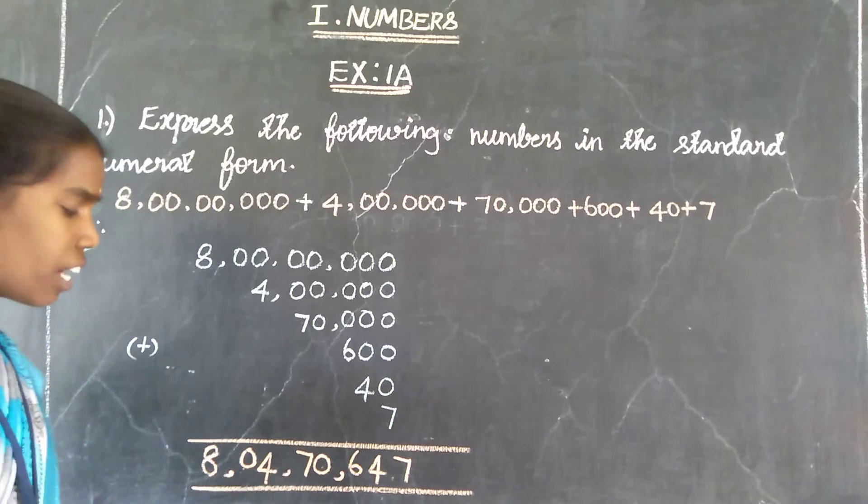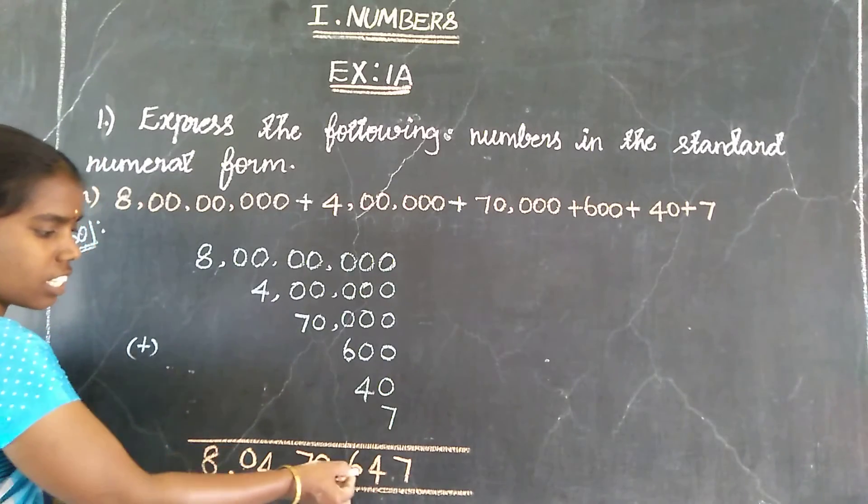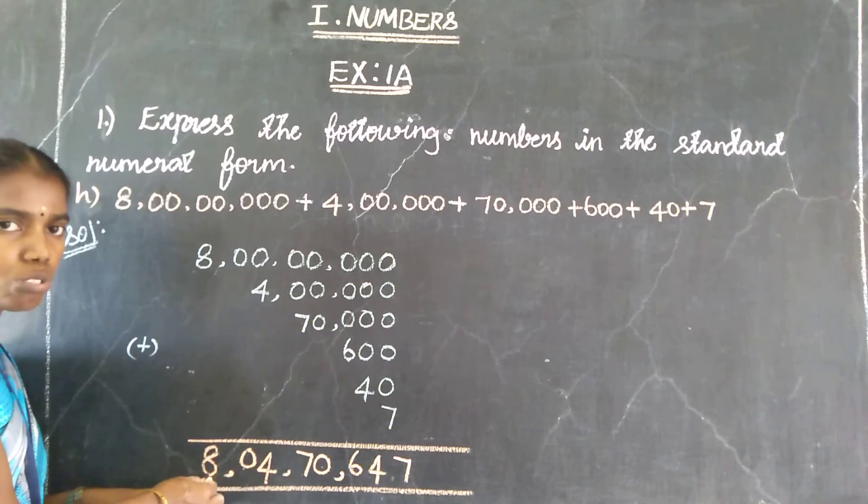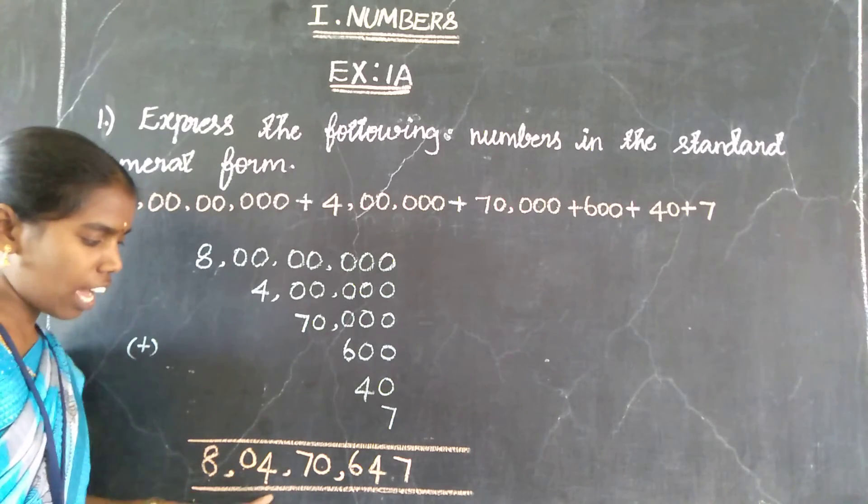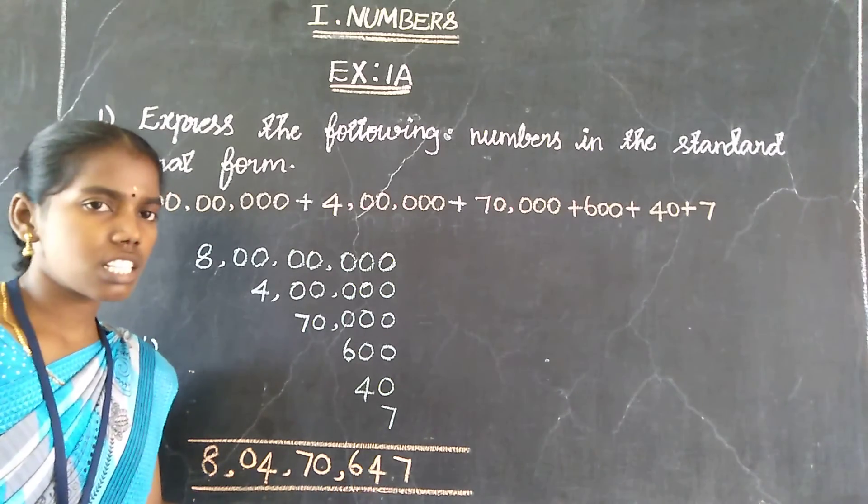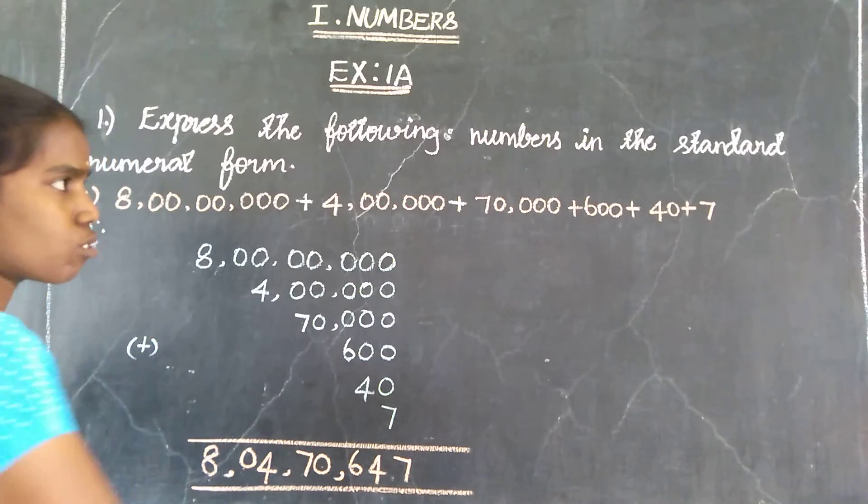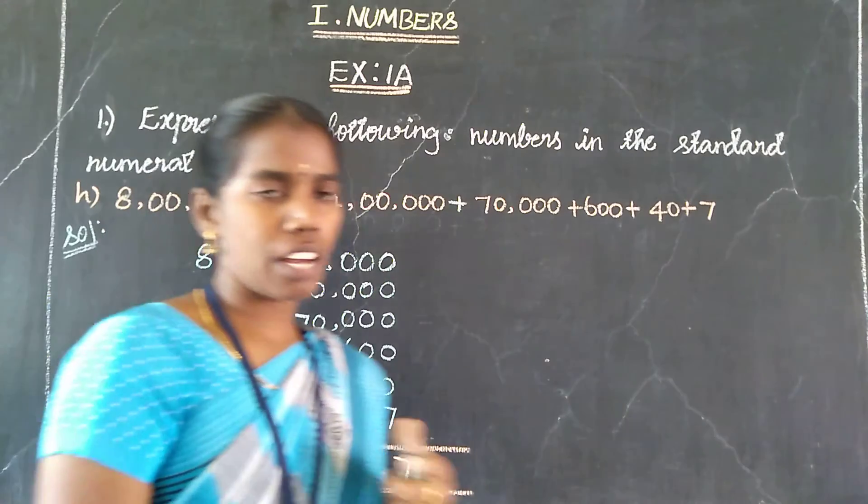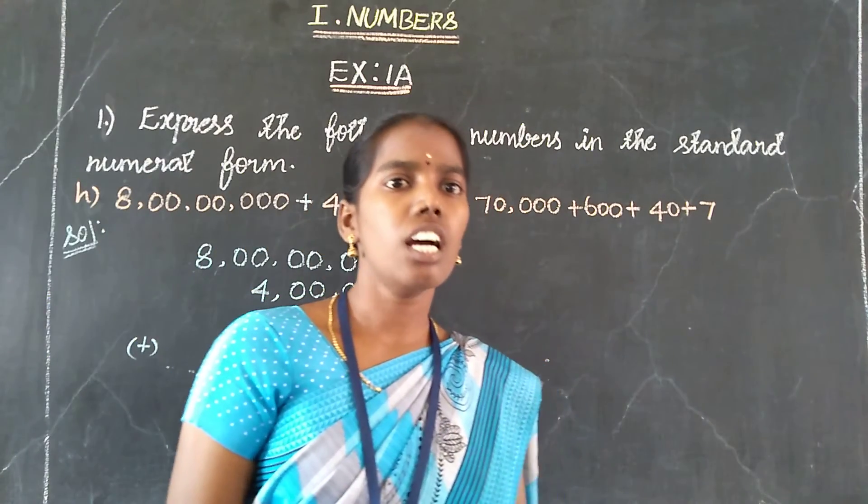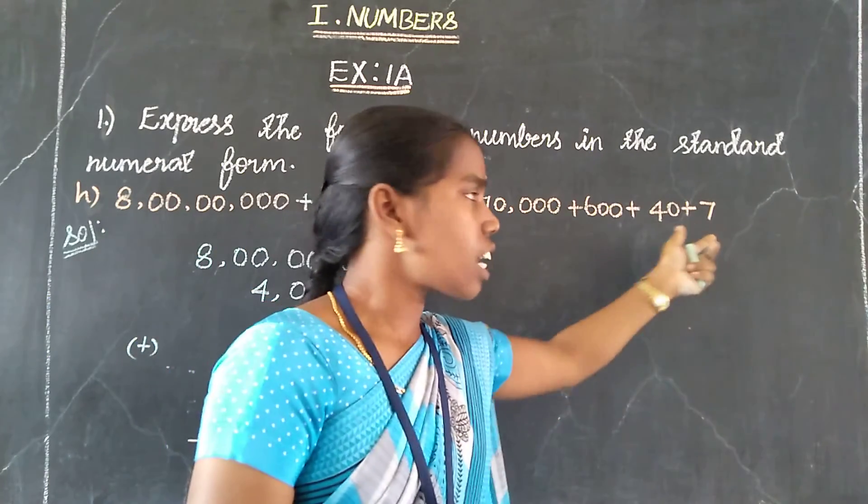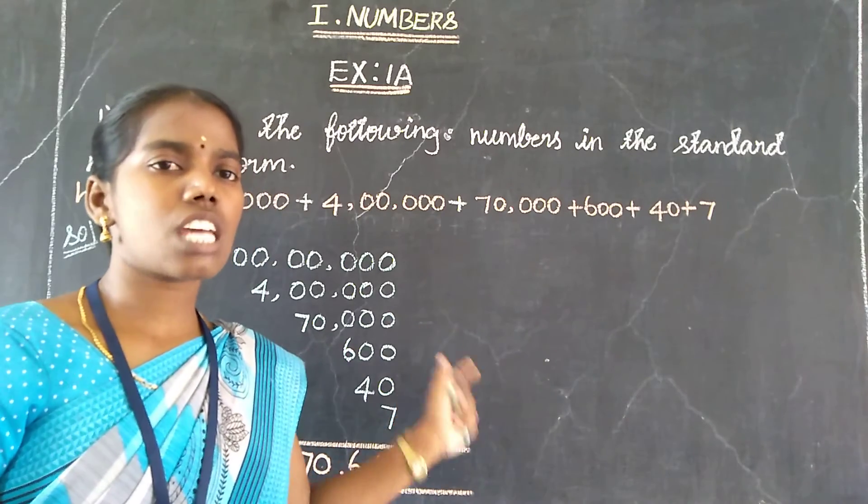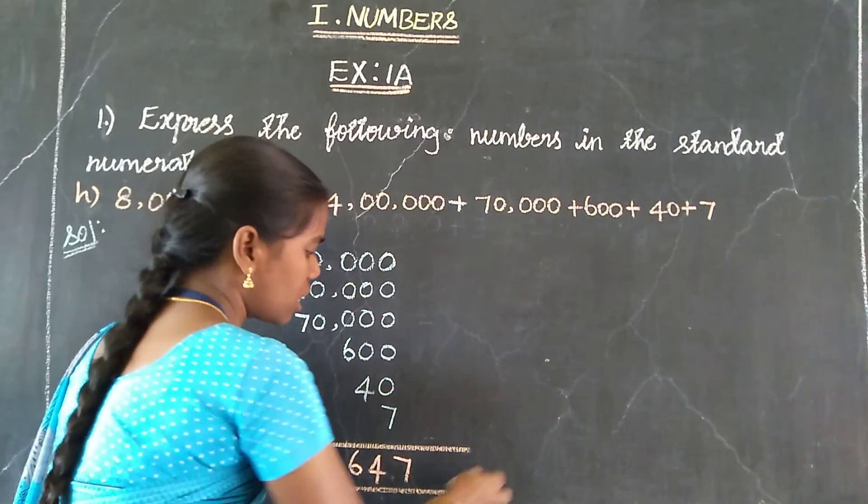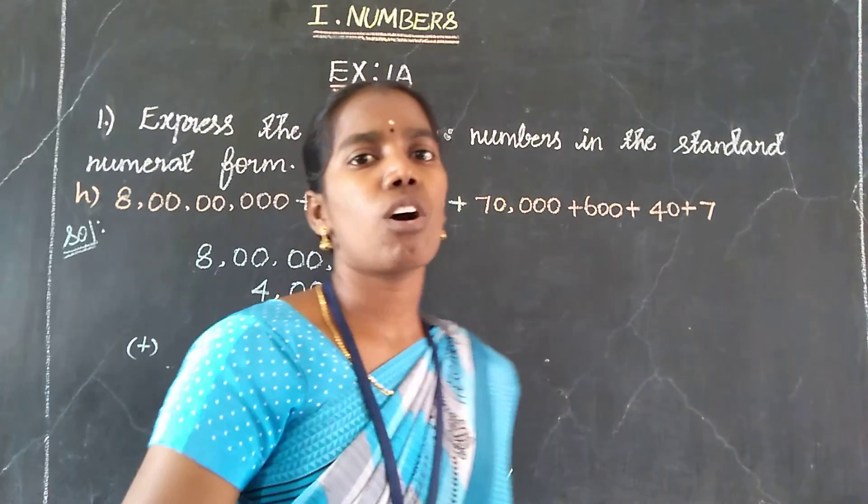How to read this number? Ones, tens, hundreds, thousands, ten thousands, lakhs, ten lakhs, crores. So 8 crore, 4 lakh, 70,647. So this is the standard numeral form.